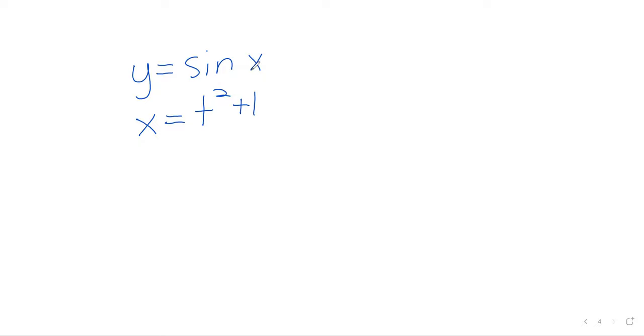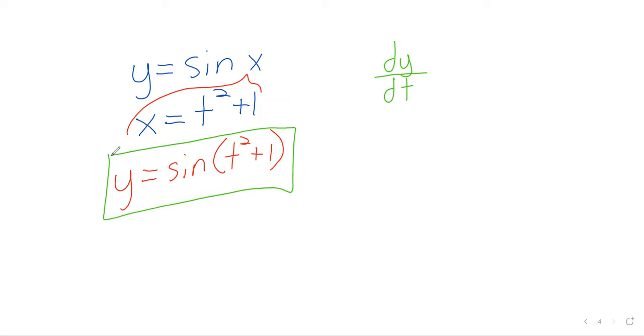Then y is a function of t. I mean, more specifically, if you take this x and you plug it in there, you see that y is the sine of t squared plus one. But these details that I put in red aren't important to the problem. I just wanted to emphasize that y is a function of t. And because y is a function of t, asking for the derivative of y in terms of the variable t makes sense.